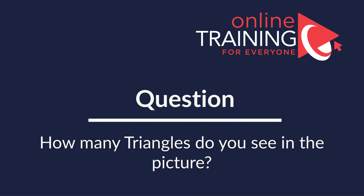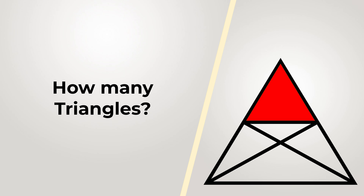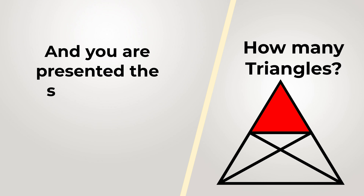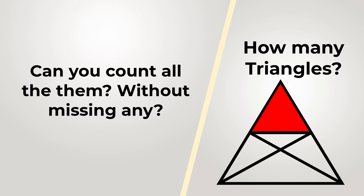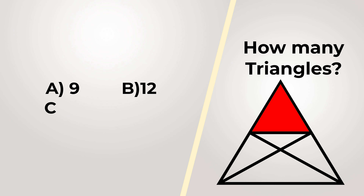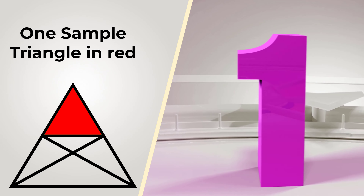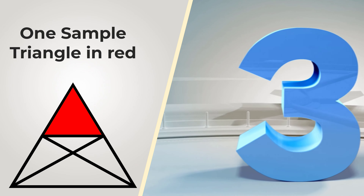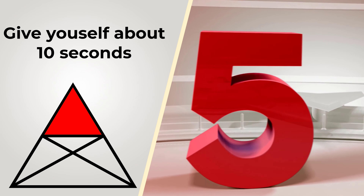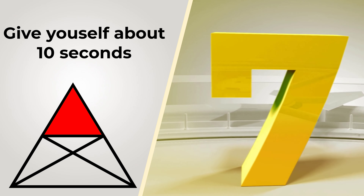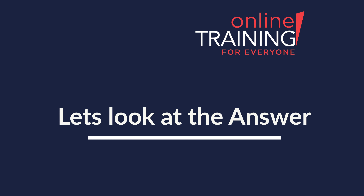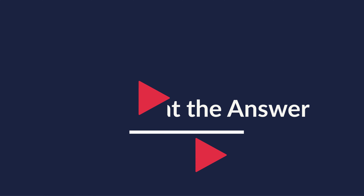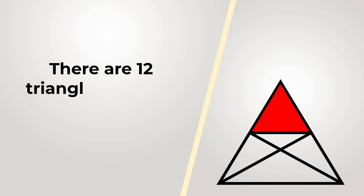This is one of my favorite questions with a high chance of appearing on the assessment test: how many triangles do you see? You're presented with a large triangle containing lines inside. You have four choices: A) 9 triangles, B) 12, C) 17, and D) 24. Give yourself 10 to 15 seconds — pause the video if needed. I counted 12 triangles in this picture.